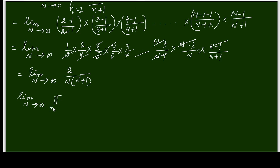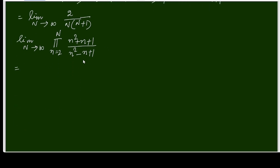Now coming to the second product: the limit as N tends to infinity of the product from n=2 to N of (n² + n + 1)/(n² - n + 1). We put in values n=2,3,4 and so on. For n=2 the numerator is 2² + 2 + 1 = 7 and the denominator is 2² - 2 + 1 = 3; for n=3 the numerator is 13 over the denominator 7.